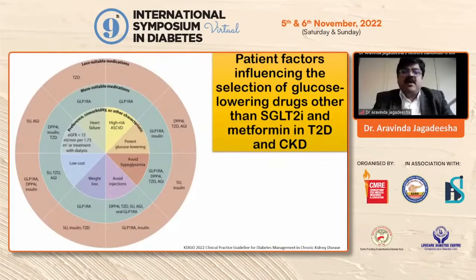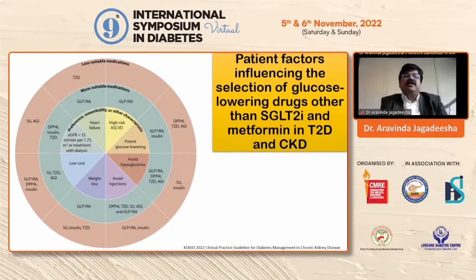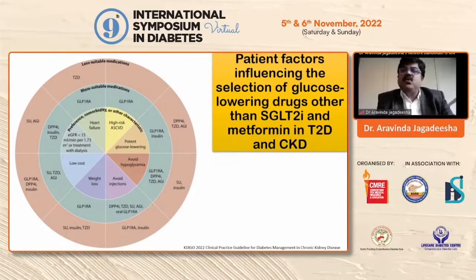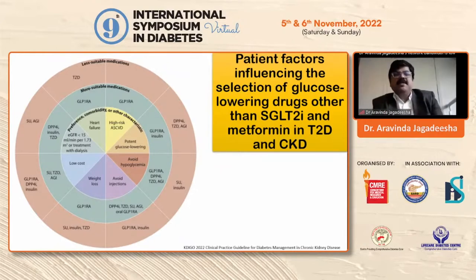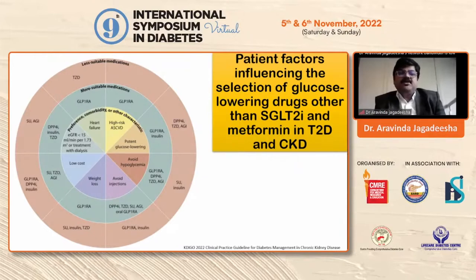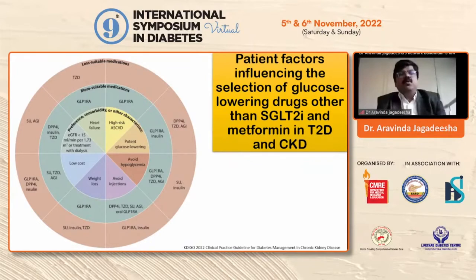This is a slide from KDIGO 2020 clinical practice guidelines for diabetes management in chronic kidney disease. It addresses patient factors influencing the selection of glucose-lowering drugs other than SGLT2 inhibitors and metformin in type 2 diabetes and CKD. For example, in the column 'avoid hypoglycemia,' the more suitable medications are GLP-1 RA, DPP-4 inhibitors, glitazones, and alpha-glucosidase inhibitors, while the less suitable medications are sulfonylureas and insulin. Going through each column individually helps decide which drug is beneficial according to the patient's need.